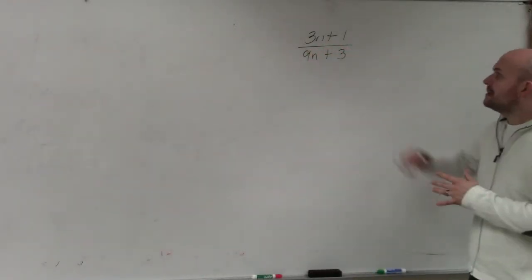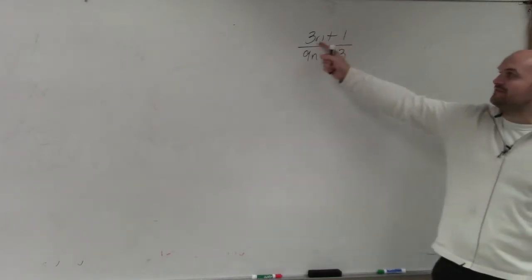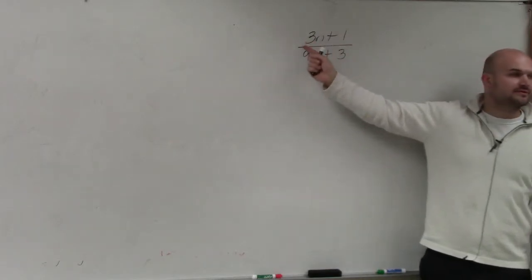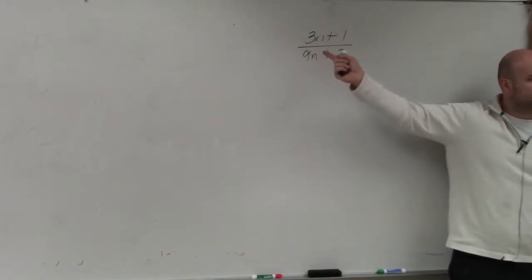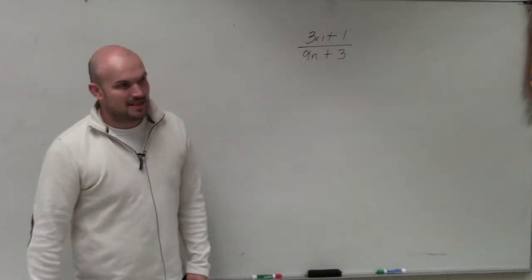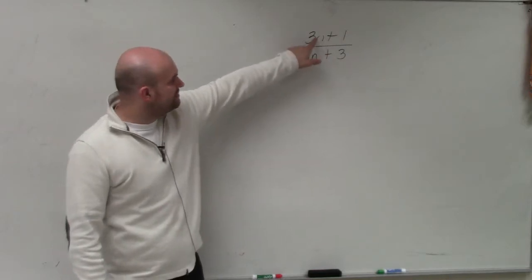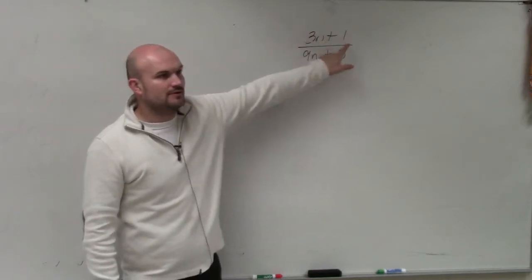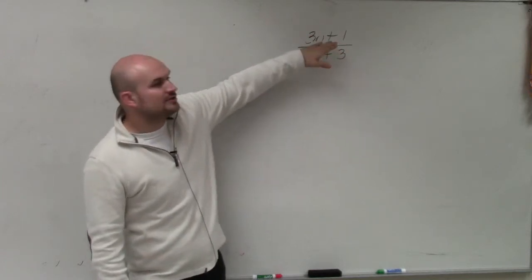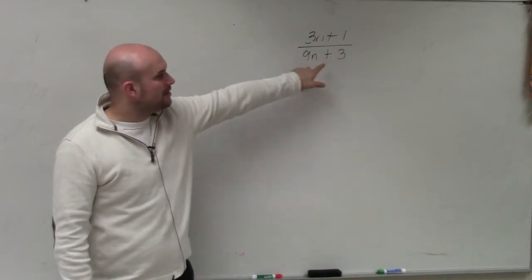I forgot to go over that, so I'll cover it now. The first thing we need to do is simplify. Can we simplify by factoring the numerator, 3m plus 1? Can I factor anything out? No, we cannot — thank you, Mariana. So both terms do not share a 3. We're factoring the numerator and the denominator separately, and there are no common factors we can factor out of the numerator.